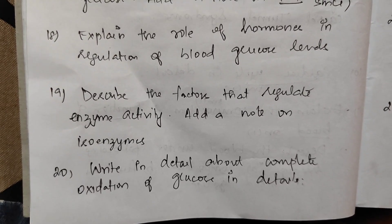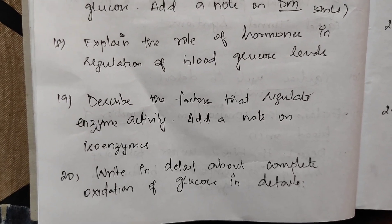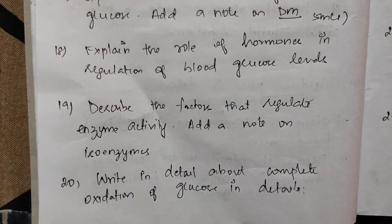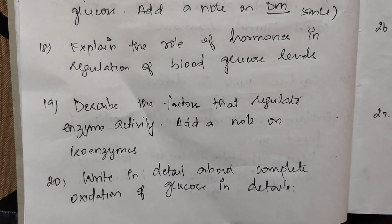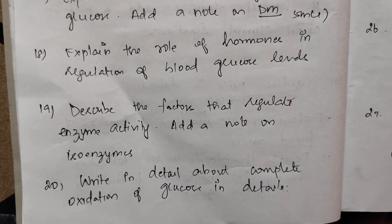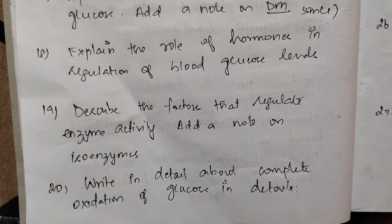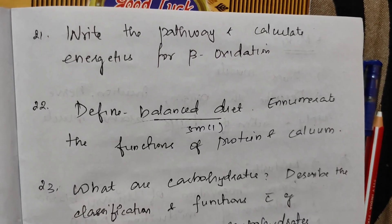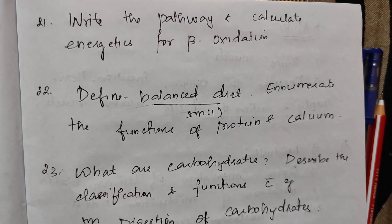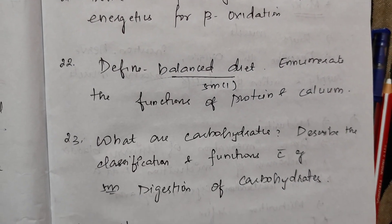For 5 marks: write in detail about the complete oxidation of glucose. Next, write the pathway and calculate the energetics for beta oxidation.